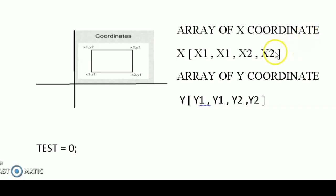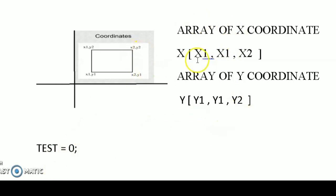If any point is missing — let's say the point (x2, y2) is missing — by taking the XOR we will get the missing point. We take a test element 0, then XOR with x1 gives x1, then x1 XOR x1 gives 0, then 0 XOR x2 gives x2. For y: 0 XOR y1 gives y1; y1 XOR y1 gives 0; 0 XOR y2 gives y2. So the missing coordinates are x2 and y2.